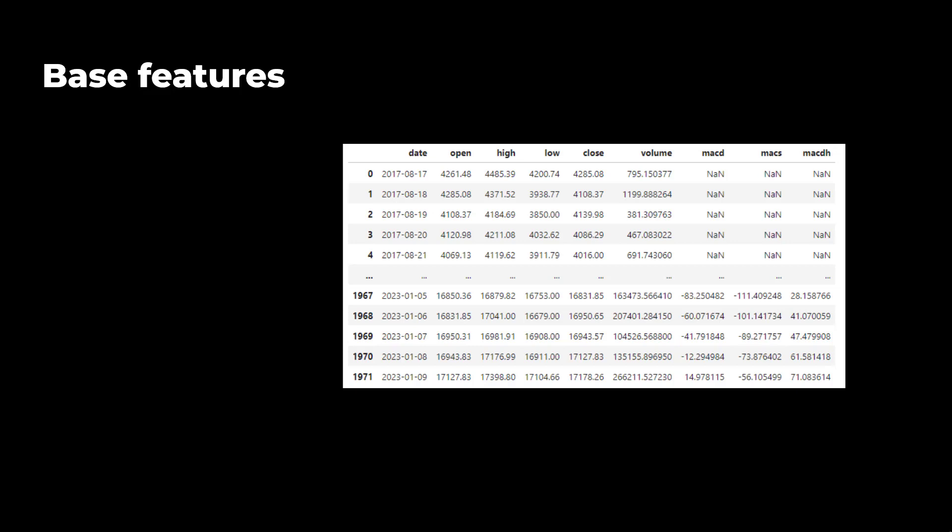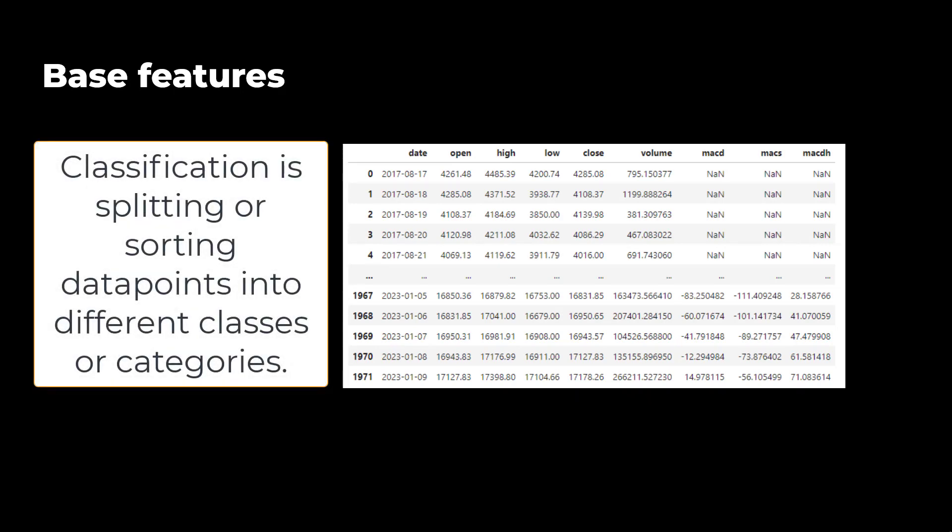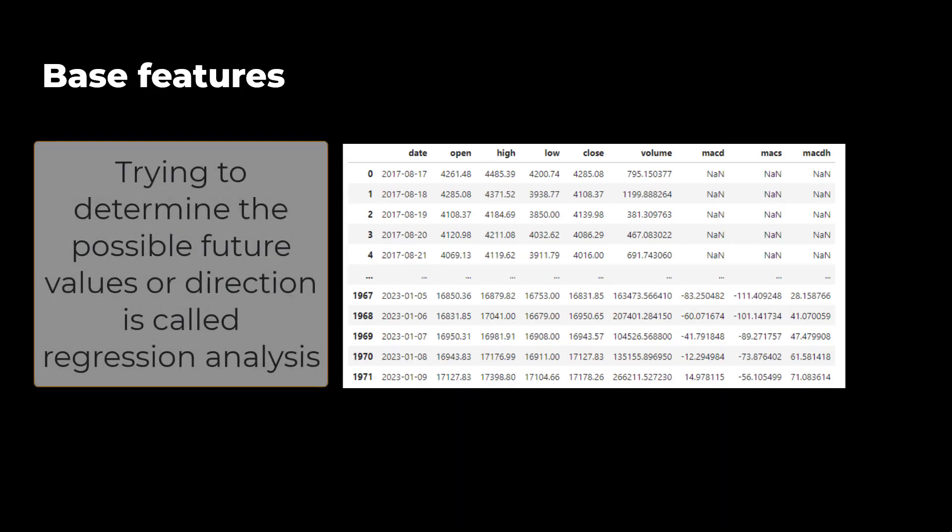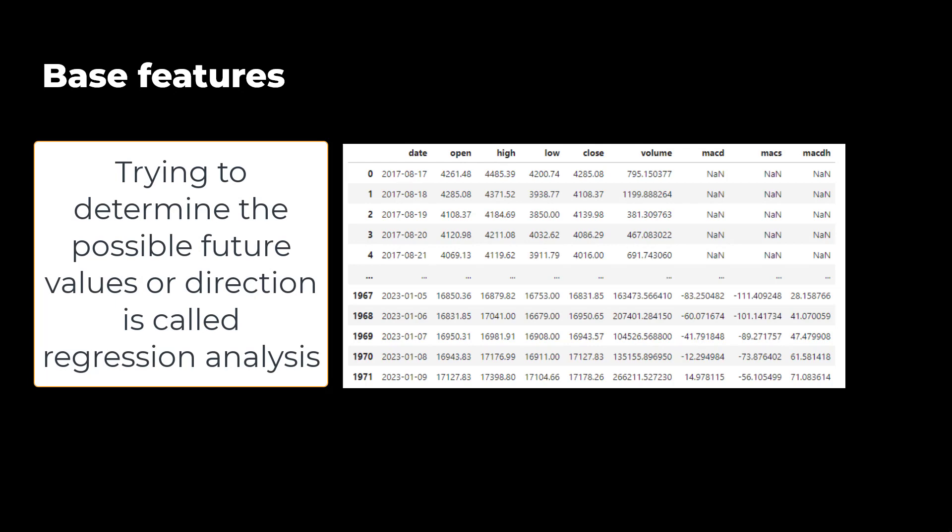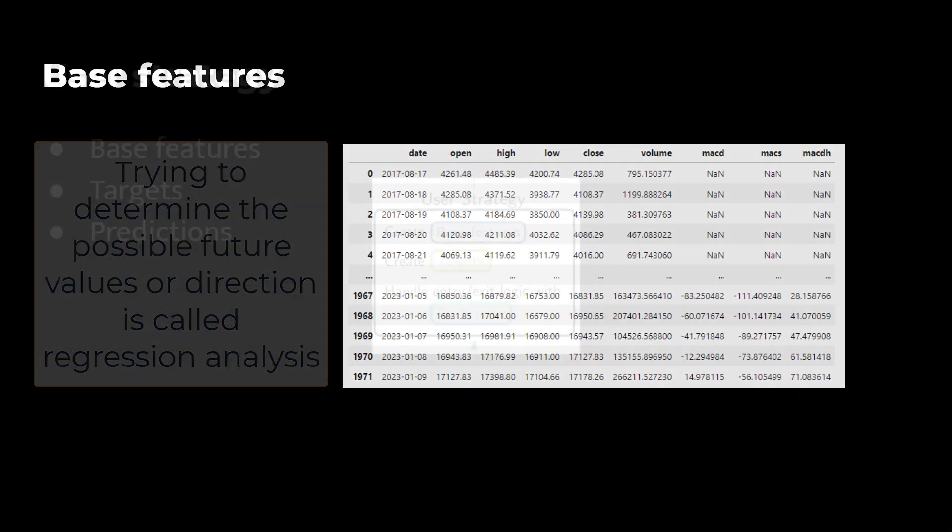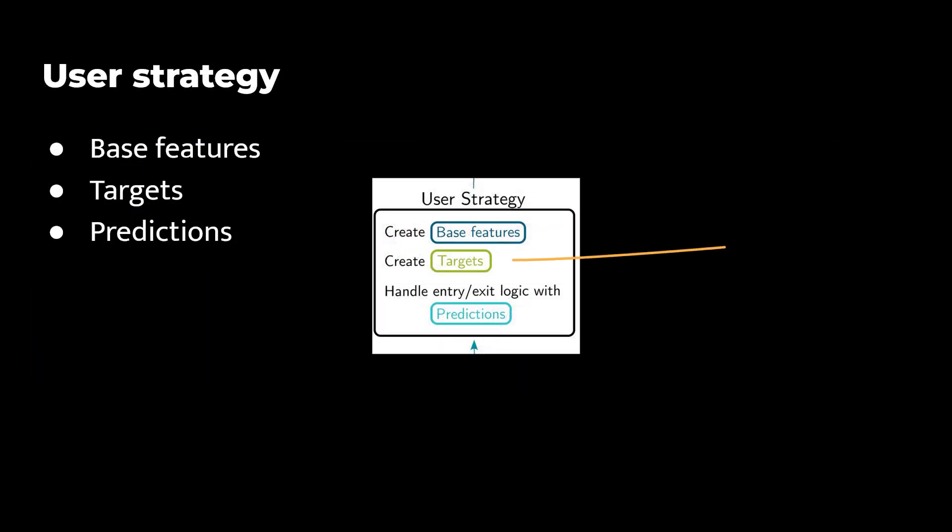Now the interesting part here is that all these features can be used in a machine learning model to predict if a future candle will be going up or down, which uses classification. Or what possible future values will be, which uses regression analysis. And these future values are called targets, which is the second thing in this diagram.